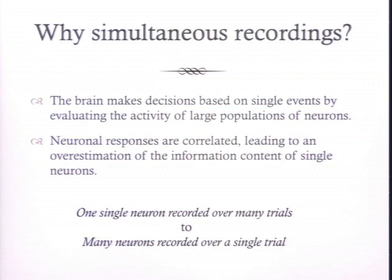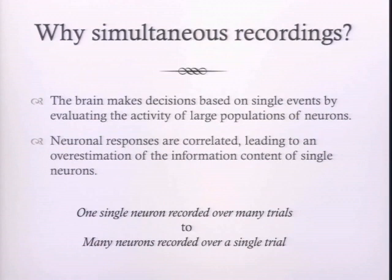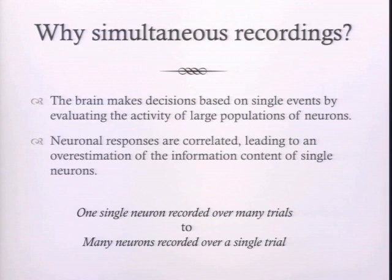The second point is that neurons in the brain do not work in isolation — they work with all the other neurons around them and likely co-vary together. Even when the brain faces the same environmental situation, the same stimulus condition, the same input, there will be some variance in the activity of these neurons, and this variance can be correlated — what we call noise correlations. These noise correlations actually lead to an overestimation of the information content of a population code.